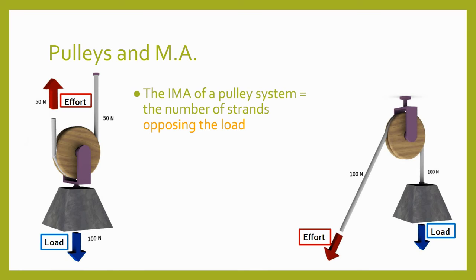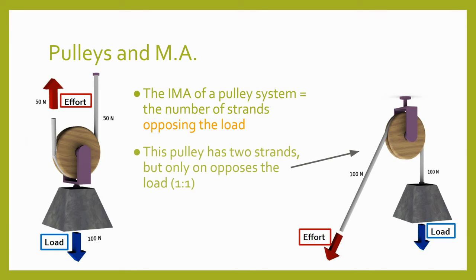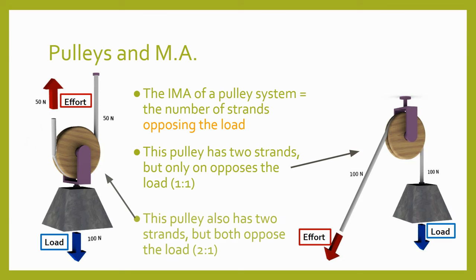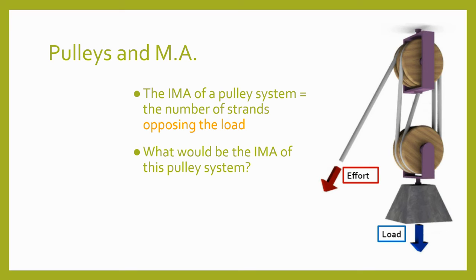Finding the IMA of a pulley system can be done without calculation. In general, the IMA of a pulley system is the number of strands opposing the load. It's not quite accurate to simply count the number of strands, because if the load force is acting downward and one strand of rope is also pulling downward, that strand is not helping to lift the load and does not contribute to the mechanical advantage. In another configuration where both strands are opposing the load, this gives the pulley an ideal mechanical advantage of 2 to 1. For a block and tackle with five strands where the effort strand is pulling in the same direction as the load, the other four strands give an IMA of 4 to 1.